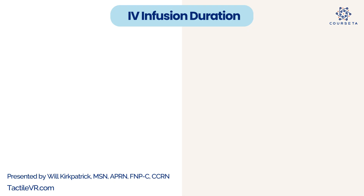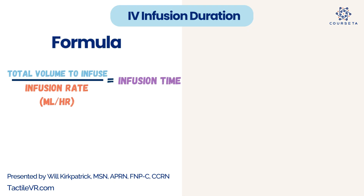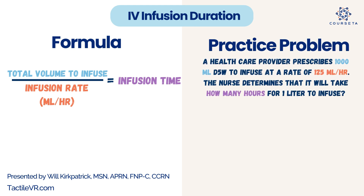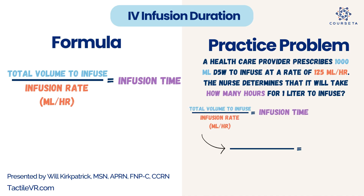For infusion time, the formula is total volume to infuse divided by the infusion rate in mL per hour, which equals infusion time. Practice problem: a prescription is 1,000 mL of D5W to infuse at 125 mL per hour. Total volume is 1,000 mL divided by 125 mL per hour equals 8 hours.